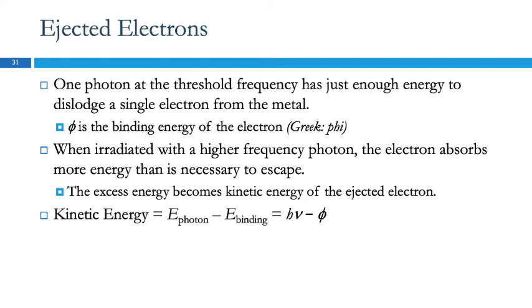One photon at that threshold frequency has just enough energy to dislodge a single electron. That threshold energy is related to an energy called the binding energy, given the Greek letter phi as its symbol. If you use higher frequency photons, they have more energy. The electron absorbs that packet of light energy, and now it has enough energy to escape. It uses up some of the energy escaping, but then it has leftover energy, and that energy we see as kinetic energy. The kinetic energy of the escaping electron is the energy of the photon minus the binding energy.